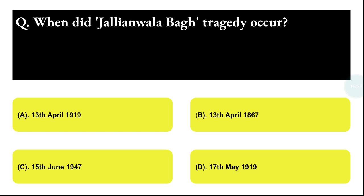Next question: when did the Jallianwala Bagh tragedy occur? Option A: 13 April 1919, Option B: 13 April 1867, Option C: 15 June 1947, Option D: 17 May 1919. The correct answer is option A, that is 13 April 1919.